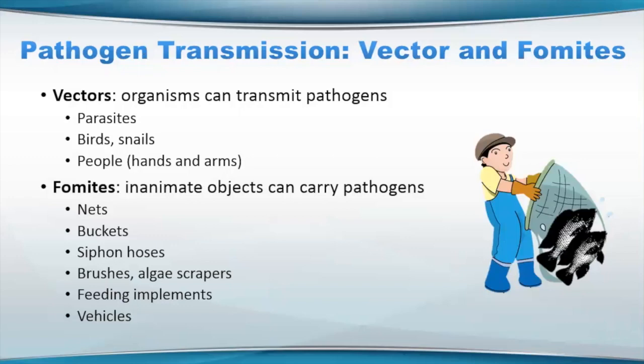Fomites are inanimate objects that can carry pathogens. Just a brief list, but there's a lot more: nets, buckets, siphon hoses, brushes, algae scrapers, feeding implements, vehicles, and other equipment that you're using — all these things can spread pathogens from one area to another.